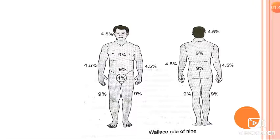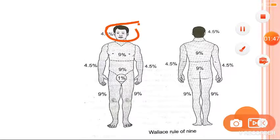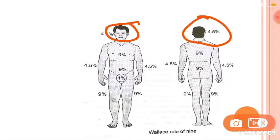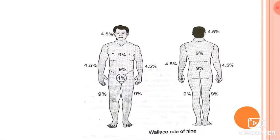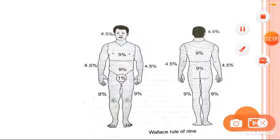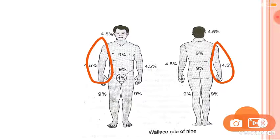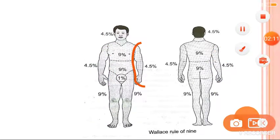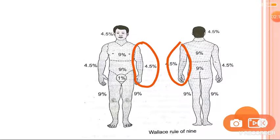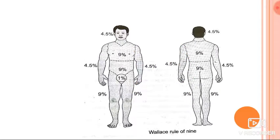Head and neck is nine percent — front and back combined. Right upper limb, front and back, totals nine percent. Left upper limb also totals nine percent.